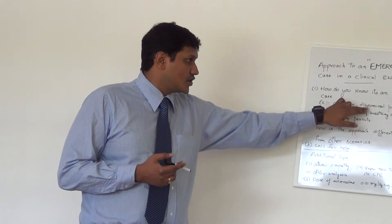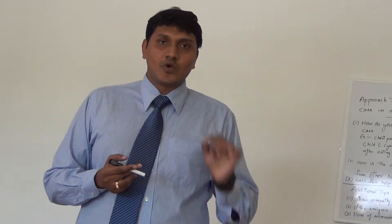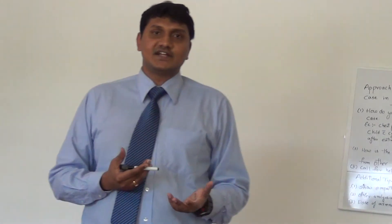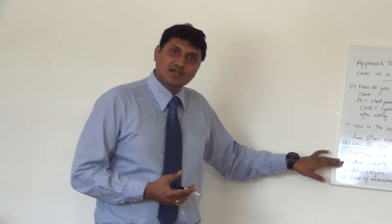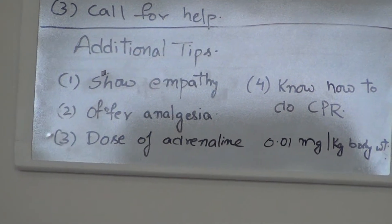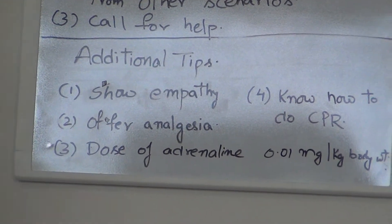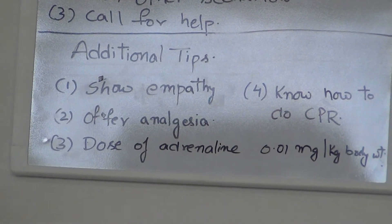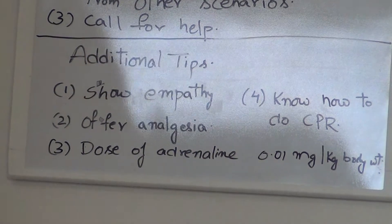If the patient is in shock, you immediately tell the examiner: I am starting fluids — I will put in two large bore cannulas and give fluids at a very high flow rate. Once you stabilize the patient, you start taking history. Sometimes the patient may be having excruciating chest or abdominal pain and may not cooperate. You should show empathy: 'Hello Mr. Smith, I can see that you are in a lot of pain.' You should offer analgesia — say, 'Would you like something for pain before I start talking to you?' This builds rapport and confidence with the patient.